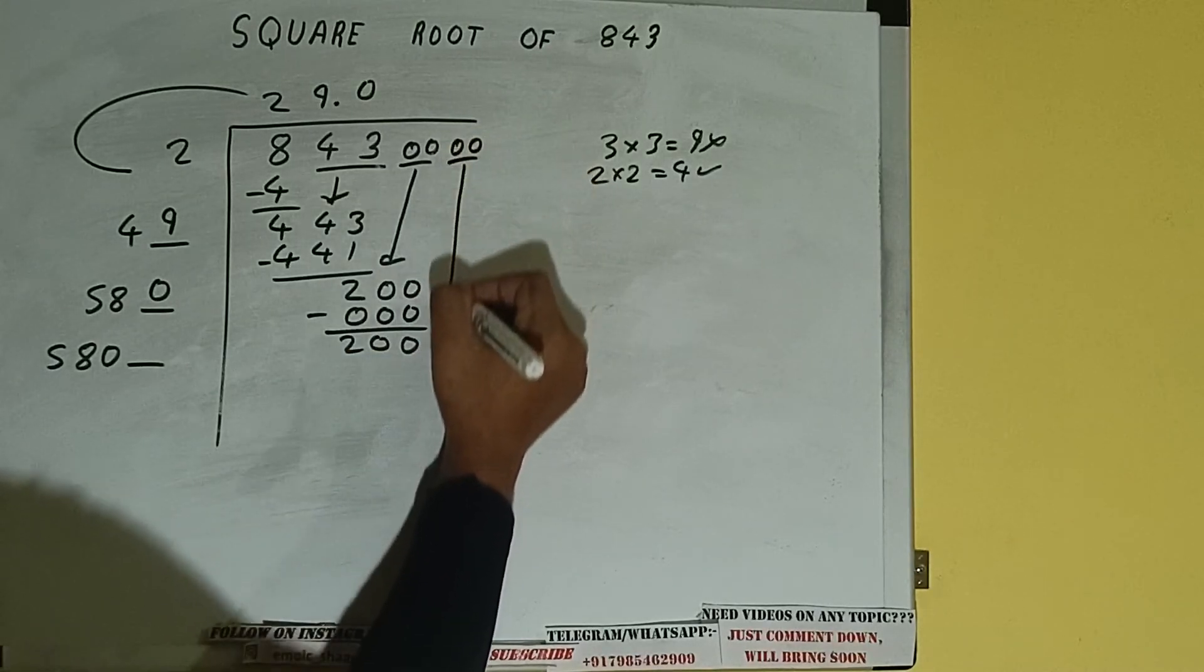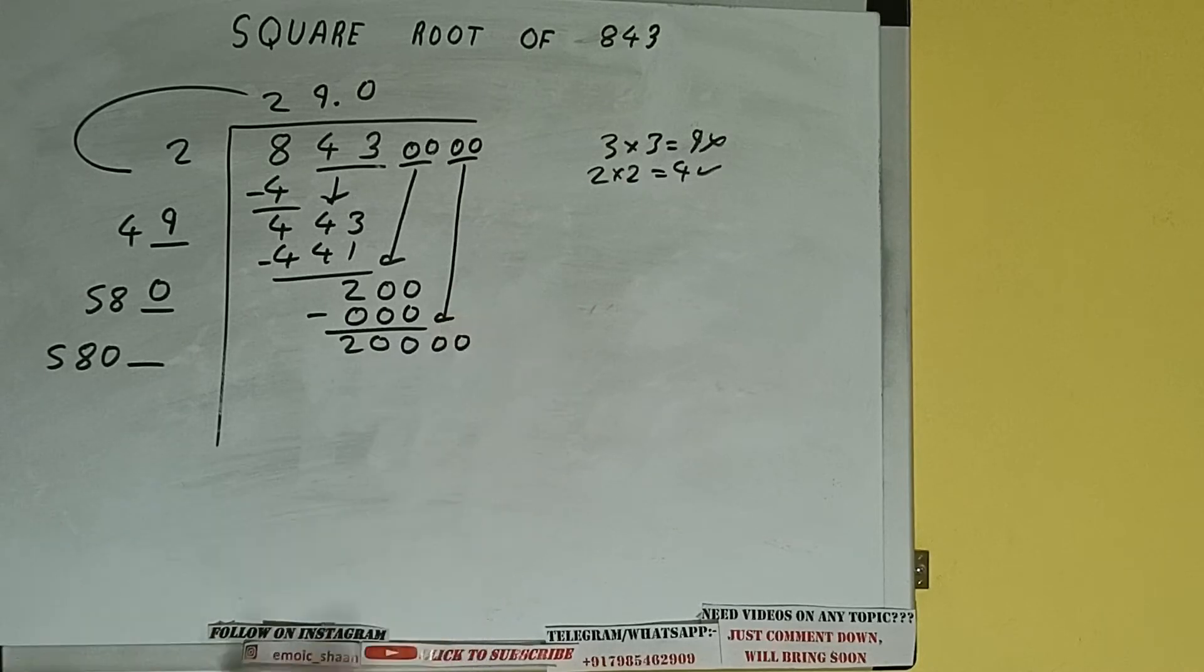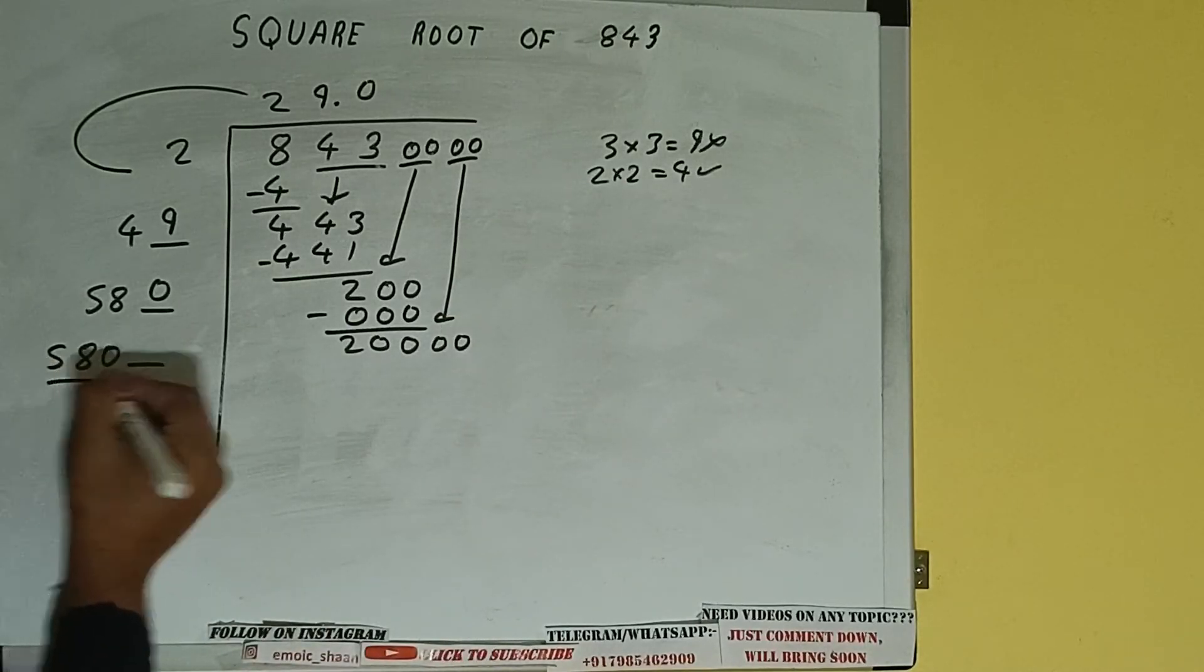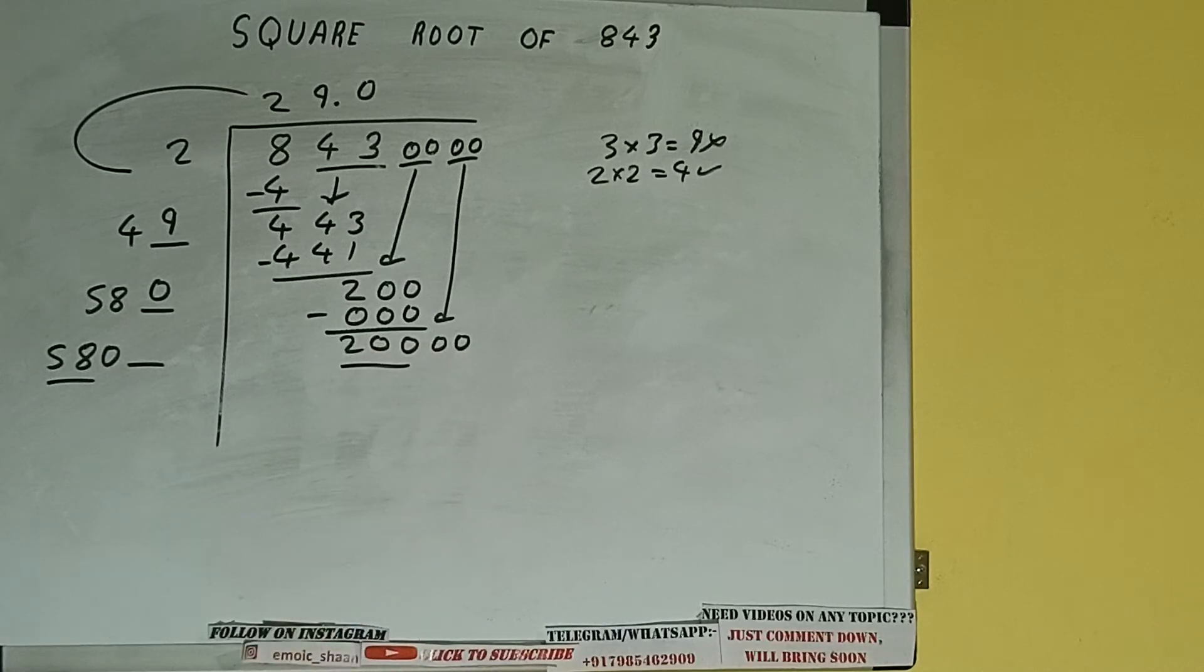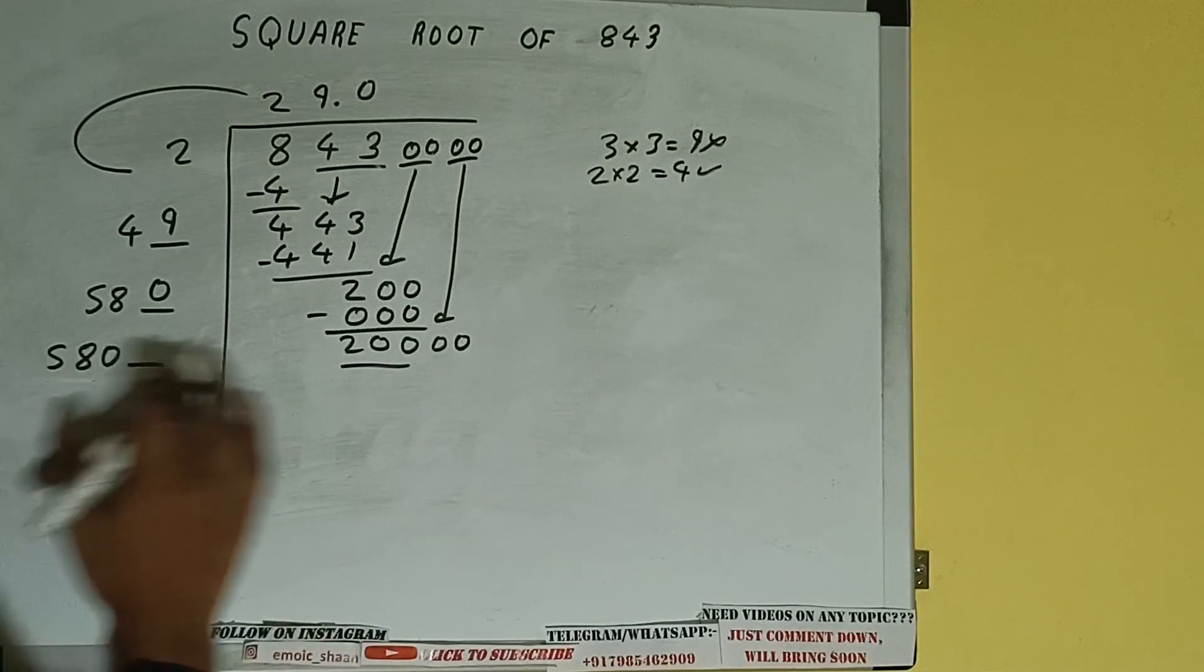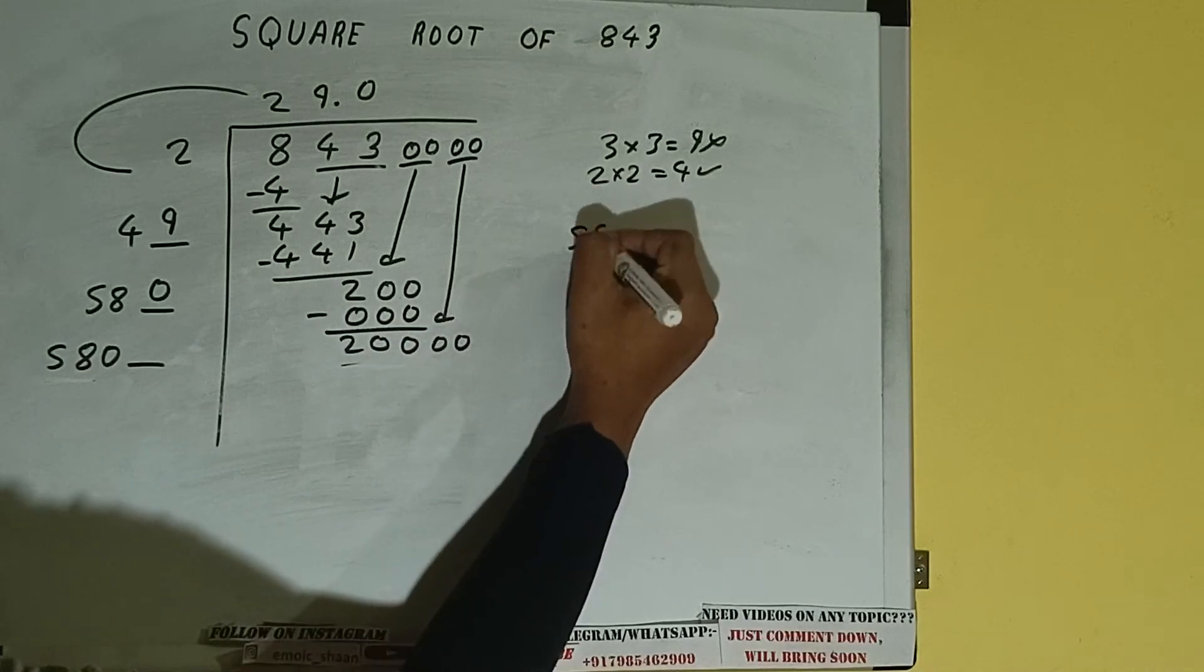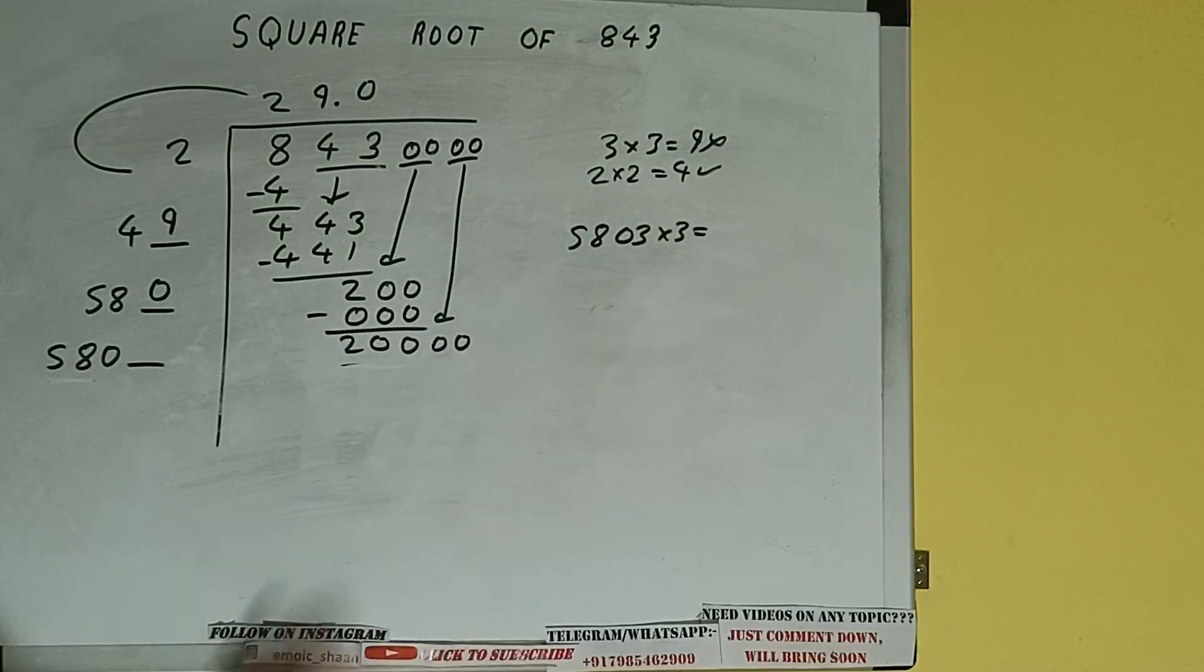So bring the next pair of zeros down and it will be 20,000. Now compare this 58 with this 200. So 58 3 times is 174. So we can try 3 times, 5803 into 3 we can try.